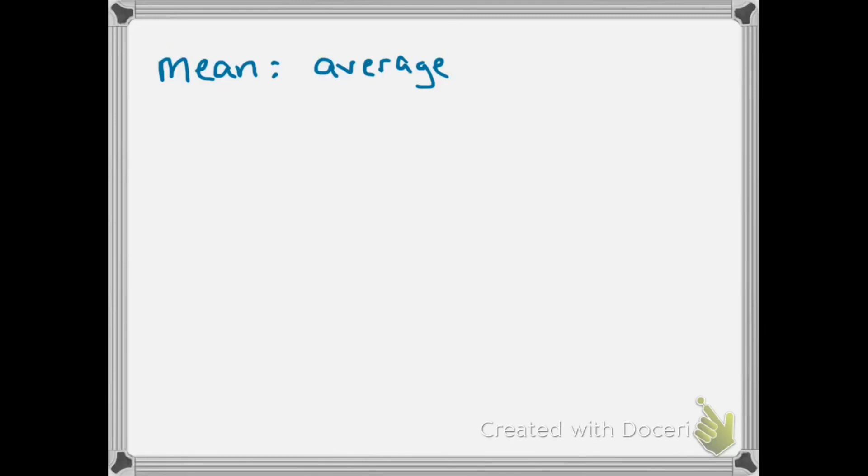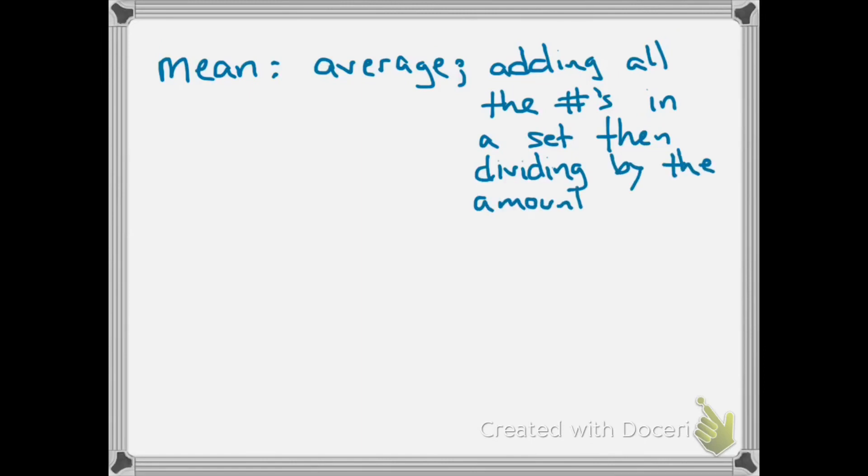Average mathematically is adding all the numbers in a set, then dividing by the amount of numbers in the set. We'll do some examples in a little bit.